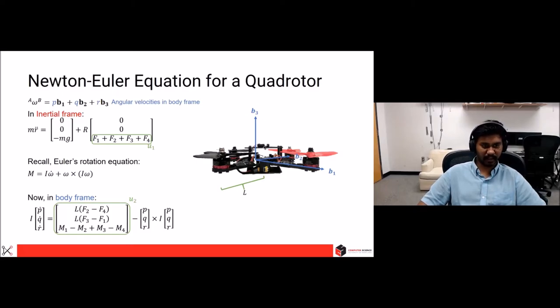In the inertial frame, we have M into A, or MR double dot, given as zero zero minus MG, which is the weight, where M is the mass of the quadrotor, and G is the acceleration due to gravity, plus R being the rotation matrix, which takes you from the body frame to the world frame, into zero zero, and sum of all the forces obtained due to each of the motor. And we will denote the sum of all the forces as the net thrust, which is U1.